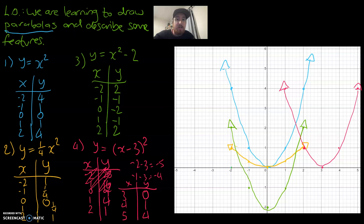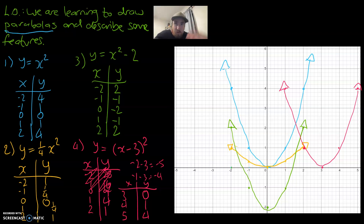So today we focused on drawing parabolas and plotting them on a graph. Along the way we explored how differences in formulas impact the parabola's shape. The blue graph is our standard x squared parabola. One quarter x squared makes a wider parabola. x squared minus 2 moves it down. And (x minus 3) squared moves it to the right. So we can make a parabola skinnier or fatter, move it up or down, or move it left or right. Hopefully you found today's video useful — now let's get into heaps of questions.